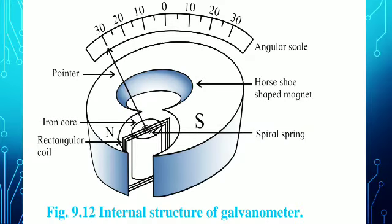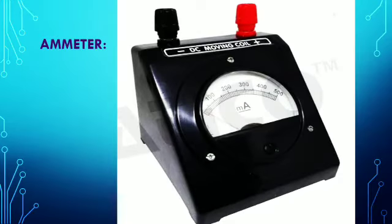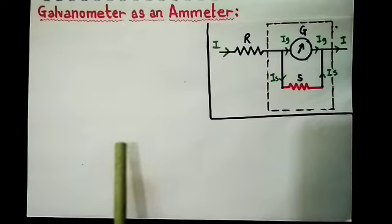The galvanometer coil has a moderate resistance of about 100 ohms, and the galvanometer itself has a small current-carrying capacity of about 1 milliampere. In the design of a moving coil galvanometer, the springs are very delicate, hence it gives full-scale deflection for a current of the order of 10 milliampere — that is, it can carry a maximum current of 10 milliampere. If a current larger than this limiting value is sent through the coil, the moving coil galvanometer can get damaged. So if we have to measure a current greater than 10 milliampere, there must be some other device — this device is called an ammeter.